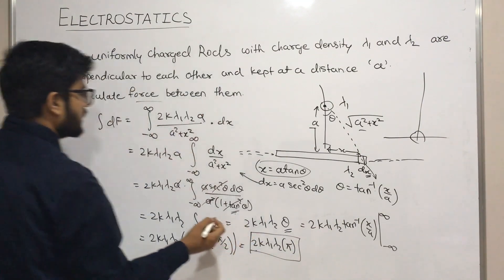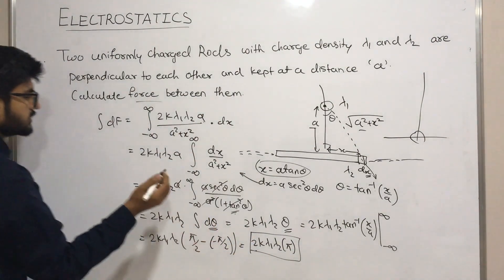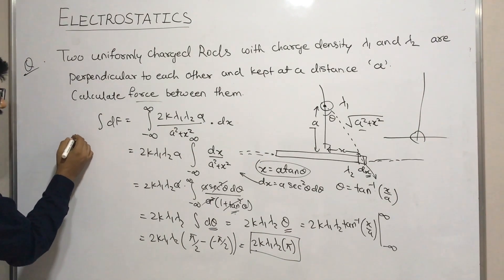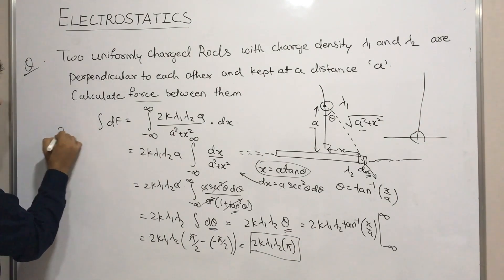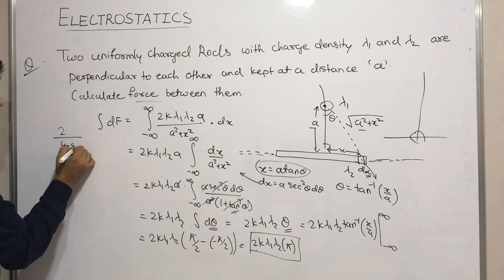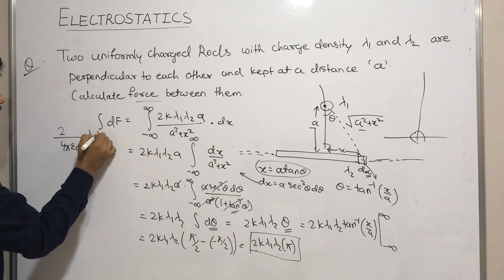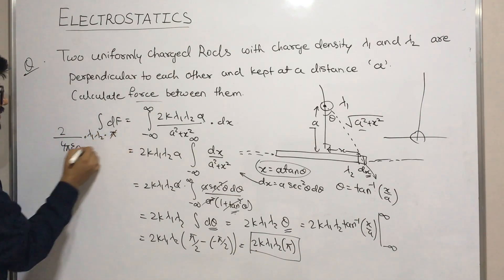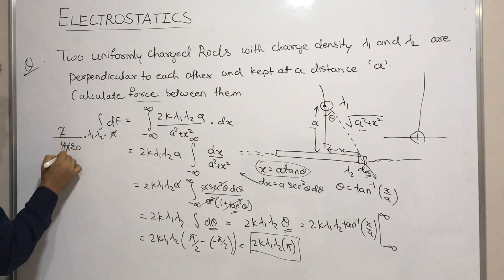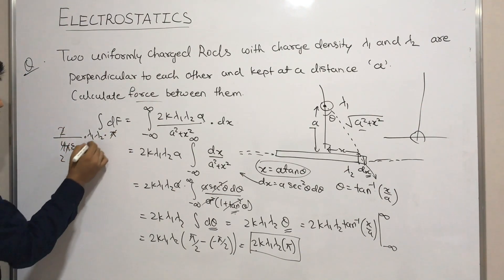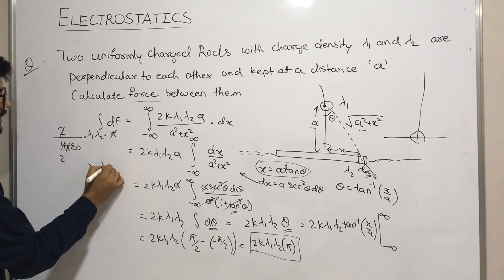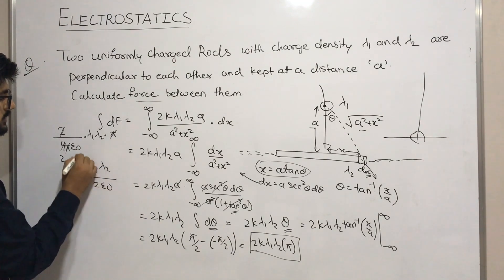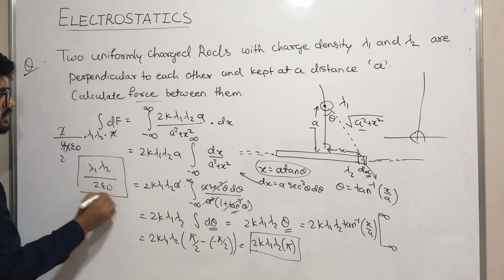Simplifying further by substituting k = 1/(4πε0): F = 2 · (1/4πε0) · λ1·λ2 · π. The pi cancels and 2 remains, giving F = λ1·λ2 / (2ε0). This is our final solution.